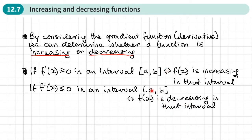I've put a double-headed arrow here because these statements can be read the other way around. For example, if a function is increasing in that interval, then the derivative is always greater than or equal to zero in that interval. So these statements can be used either way around.